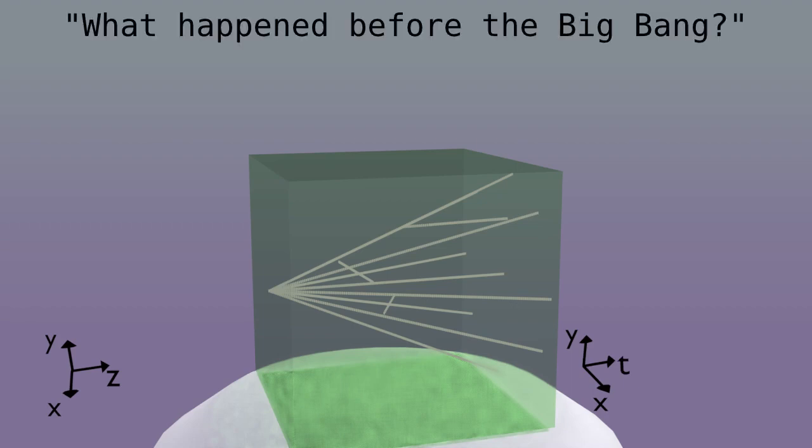Some of us may ask, what happened before the Big Bang? Well, the physicist may simply say there is no before, because the time coordinate starts at the Big Bang. There is nothing outside the block.